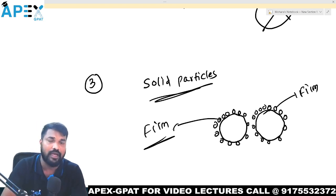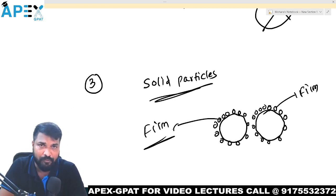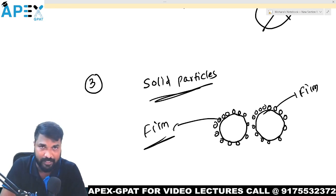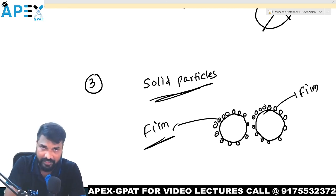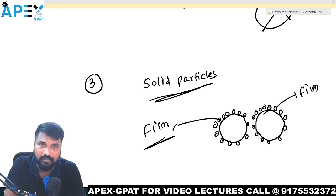These are the three approaches by which we can make an emulsion stable. I think it is very clear. Thank you.